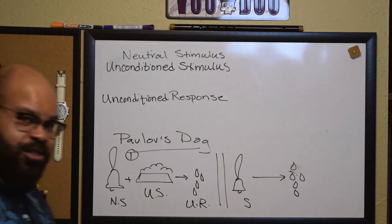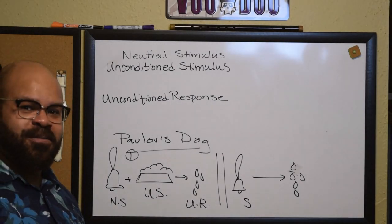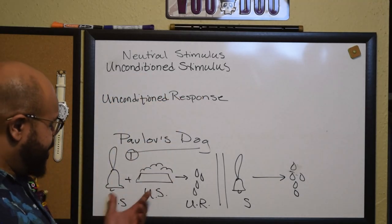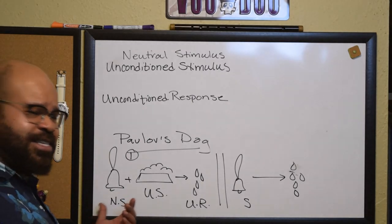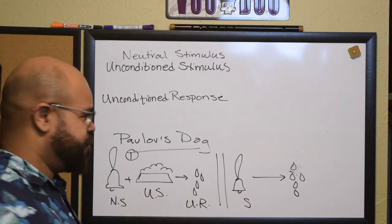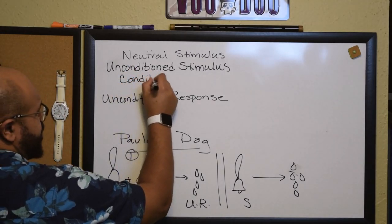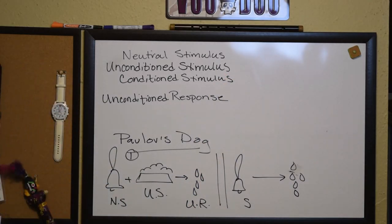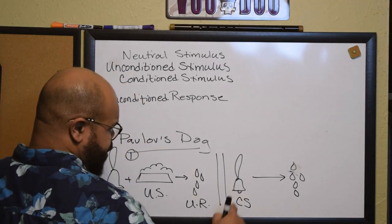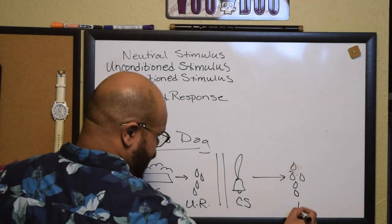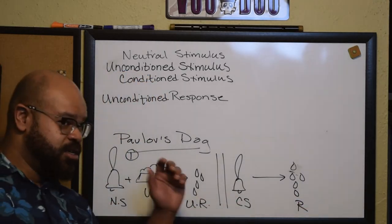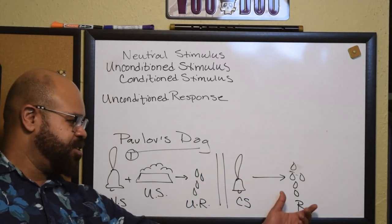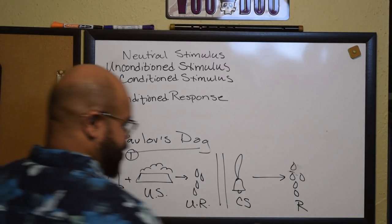At the point where the stimulus that was neutral causes a response, it's no longer neutral anymore. Now it's causing a response, so we can't call it a neutral stimulus. We also can't call it an unconditioned stimulus, because it didn't know what to do with the bell at first — we did in fact have to train it to respond to the bell. And so this is what's known as a conditioned stimulus.